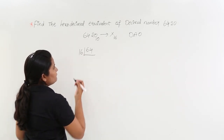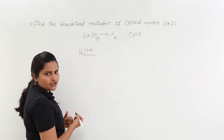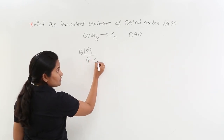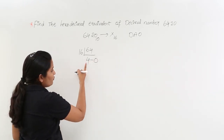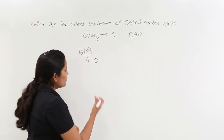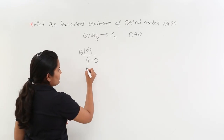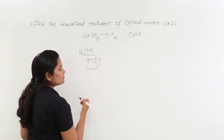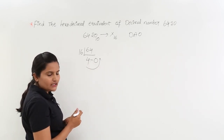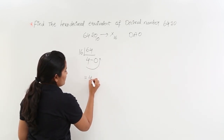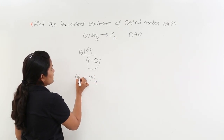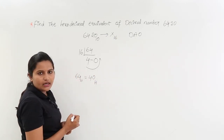So here, 16 goes into 64 four times — 16 × 4 = 64 — and the remainder is 0. Now 4 is less than 16, so no need to perform another division; you take the result as it is. From bottom to top, you read the result. There are only two digits: 4 and 0.